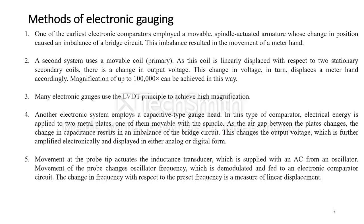Another electronic system employed with this comparator is capacitive change. Two metal plates which are movable — and this movement is connected to a spindle. With the spindle movement, the gap between these two metal plates will change, which changes the dielectric constant. With the change in the dielectric constant, the capacitance changes. This change in capacitance is connected to a bridge, which is similar to a Wheatstone bridge. This imbalance movement is connected to a meter, which varies linearly.